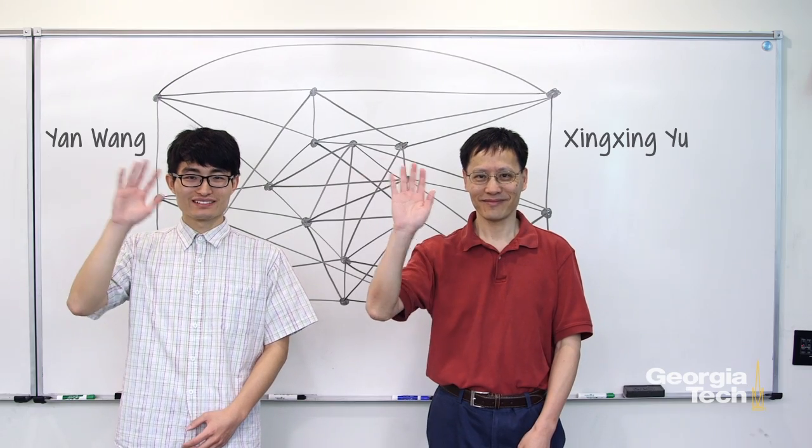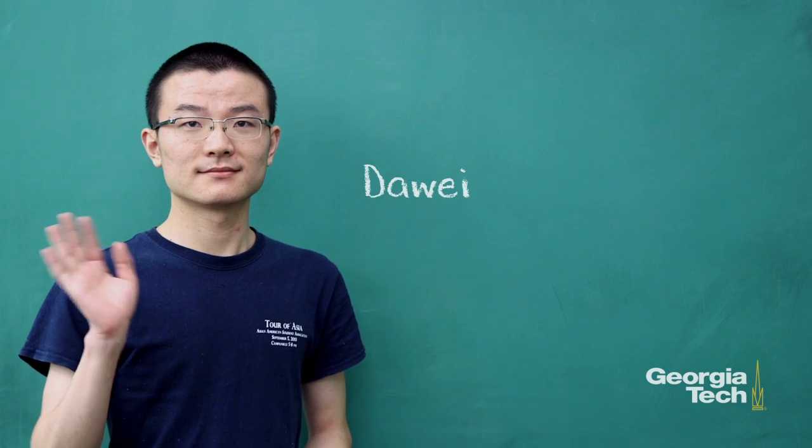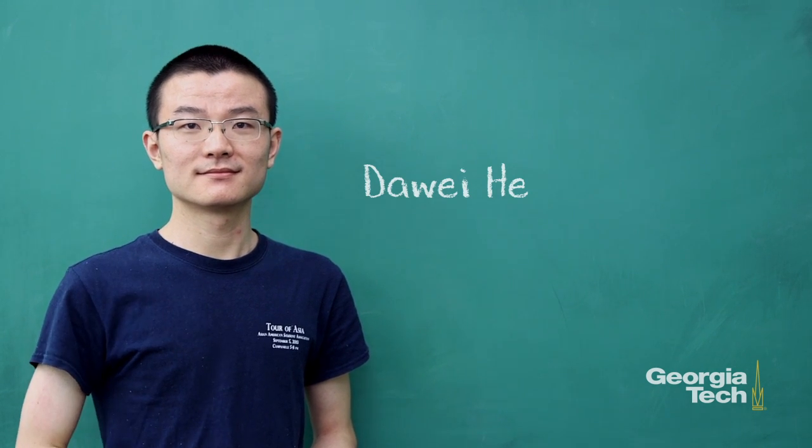Three mathematicians from Georgia Tech just solved a 40-year-old math mystery. Here they are: Yan and Jing Zheng at the whiteboard, and Dawei at the green board is going to help us with some easy, basic concepts.